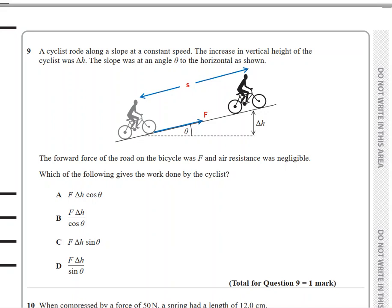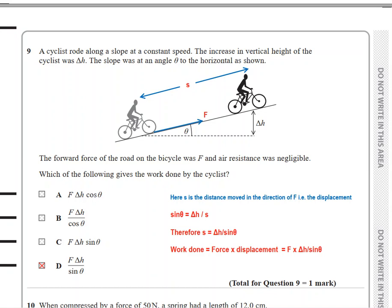Here the distance moved in the direction of F is the displacement. So sine theta equals Δh, as in opposite by hypotenuse. So s will be equal to Δh by sine theta.